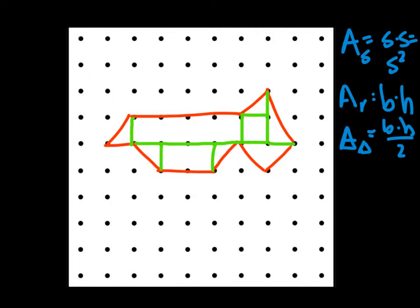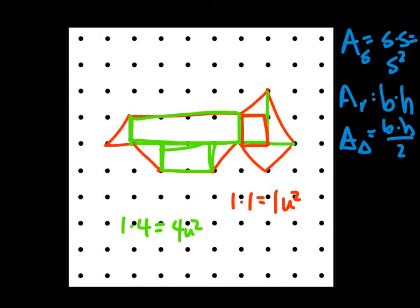Looking at this particular situation, let's look at just the squares. We have one square, it is a one by one. So one times one equals one unit squared. Let's look now at our rectangles. We have one one by four rectangle, which equals four units squared. We have a one by two, that's two units squared.